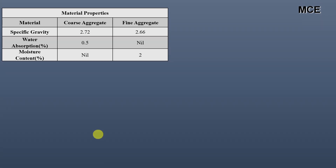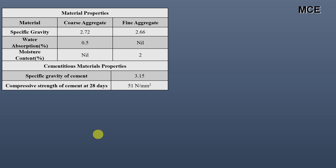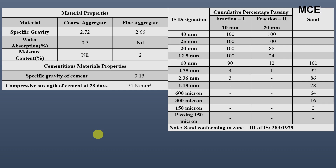First we will find the target strength for our concrete. The material properties are: specific gravity of coarse aggregate is 2.72 and for fine aggregate is 2.66. Water absorption is 0.5% for coarse aggregate and nil for fine aggregate. Moisture content in coarse aggregate is nil and for fine aggregate it's 2%. Specific gravity of cement is 3.15 and characteristic compressive strength of cement at 28 days is 51 N/mm².